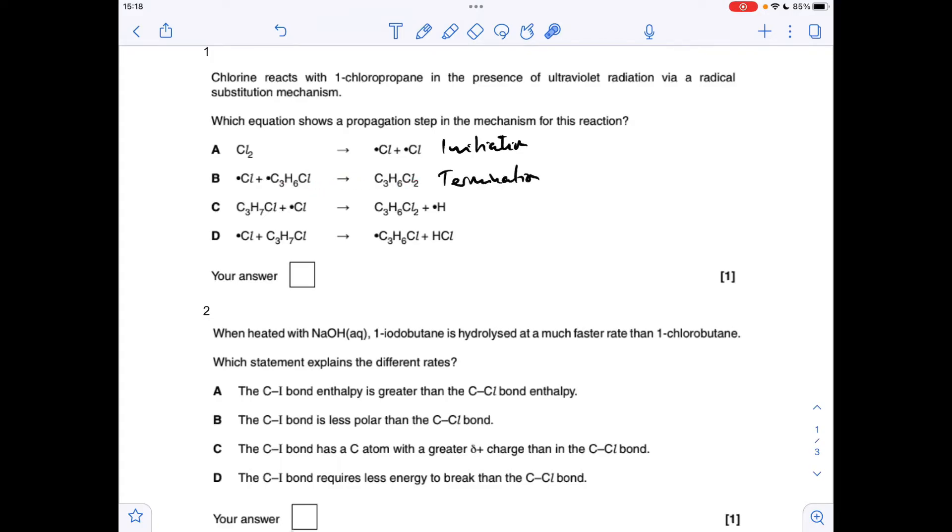So that leaves us with C and D and they both look at first glance like propagation steps because you've got one radical on the left hand side and you've got a different radical on the right hand side, but which is the right one for this reaction? Well, it's actually D because when a halogen radical reacts with a haloalkane it takes a hydrogen off and makes HCl.